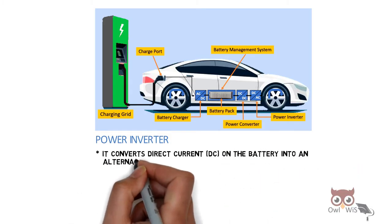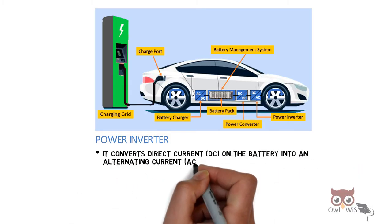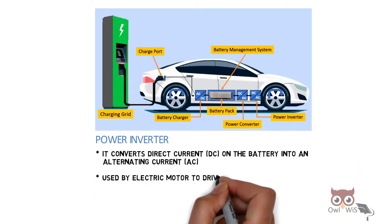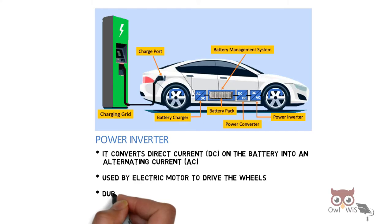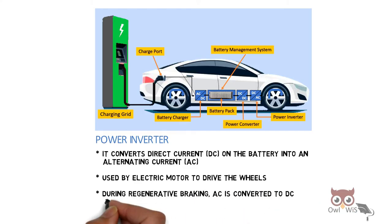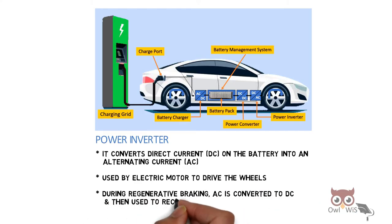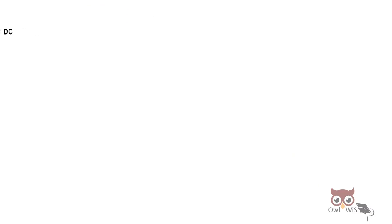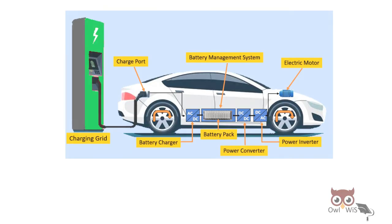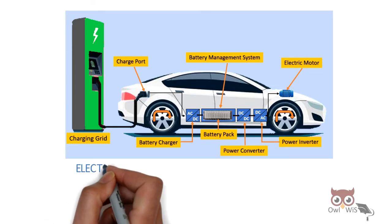Next is the power inverter. It converts the direct current from the battery into alternating current, which is used by the electric motor to drive the wheels. During regenerative braking, AC is converted back to DC and used to recharge the battery.